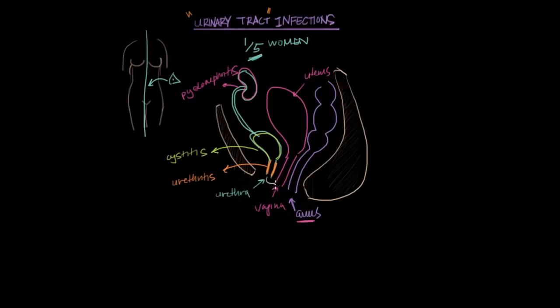The anus and the urethra are so close together in women that it makes contamination a lot more likely. And the urethra in women is also a lot shorter than it is in men. So the bacteria have a much shorter climb on their way to the bladder, also contributing to the fact that UTIs are more common in women.